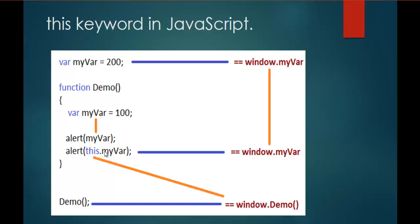So 'this.myvar' will refer to the global 'myvar' variable and we get the output 200. However, if you try to access without 'this', it will point to the local 'myvar' and we get 100. The window object represents an open window in a browser — and it is the top-level object in client-side JavaScript. Since it is the top-level object, it can contain other objects like document and history. We will learn more about the window object in coming sessions.